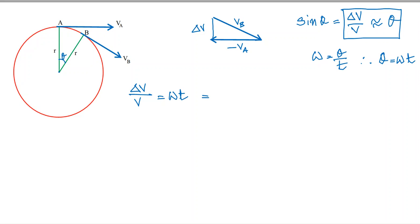Do you remember the equation that links angular velocity with tangential velocity? Since V equals r omega, therefore omega should be equal to V by r. So instead of writing omega t, we can write delta V by V equals V by r times t.